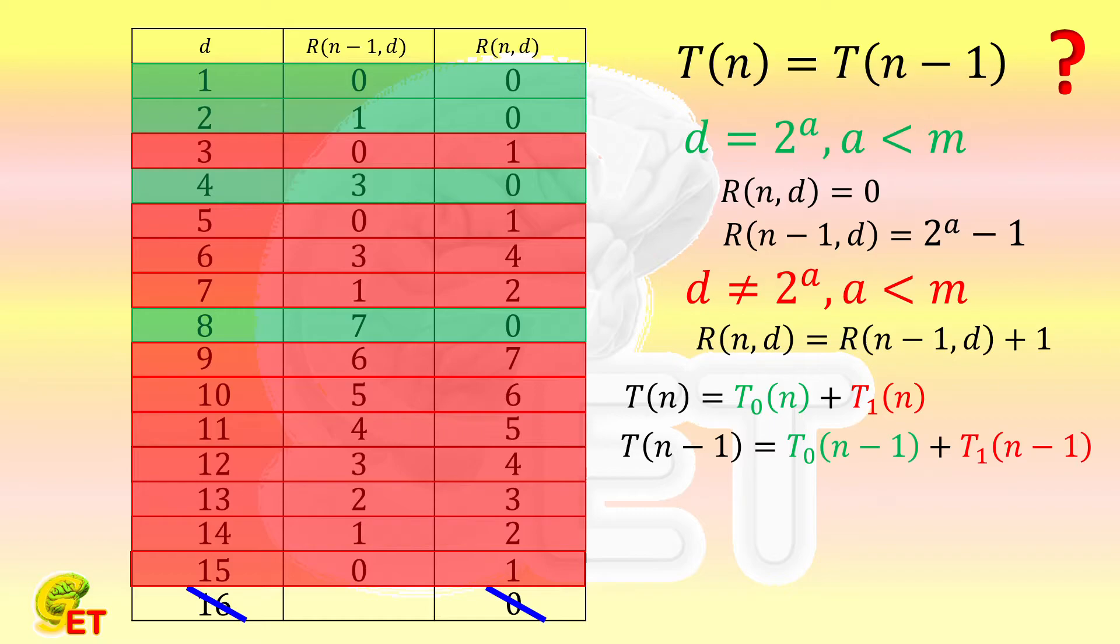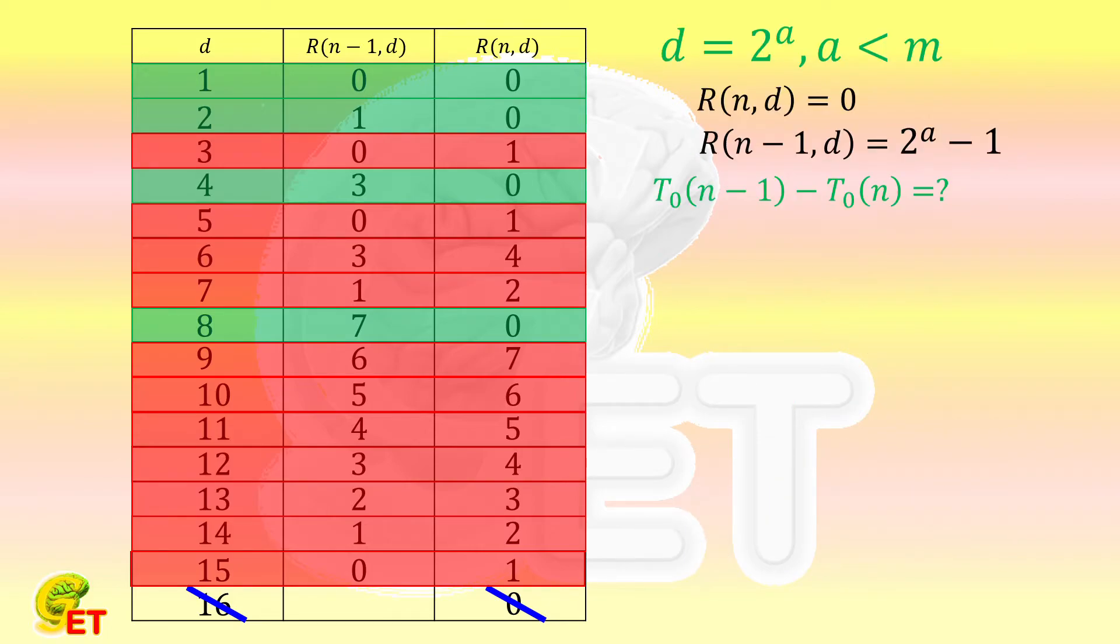T0 represents the summation of remainders when d is 2 to the a-th power, and T1 represents the summation of remainders when d is not 2 to the a-th power. Then let's calculate T0(n-1) minus T0(n), and T1(n) minus T1(n-1), respectively. In the first formula, T0(n) is always 0. So we just need to calculate T0(n-1).